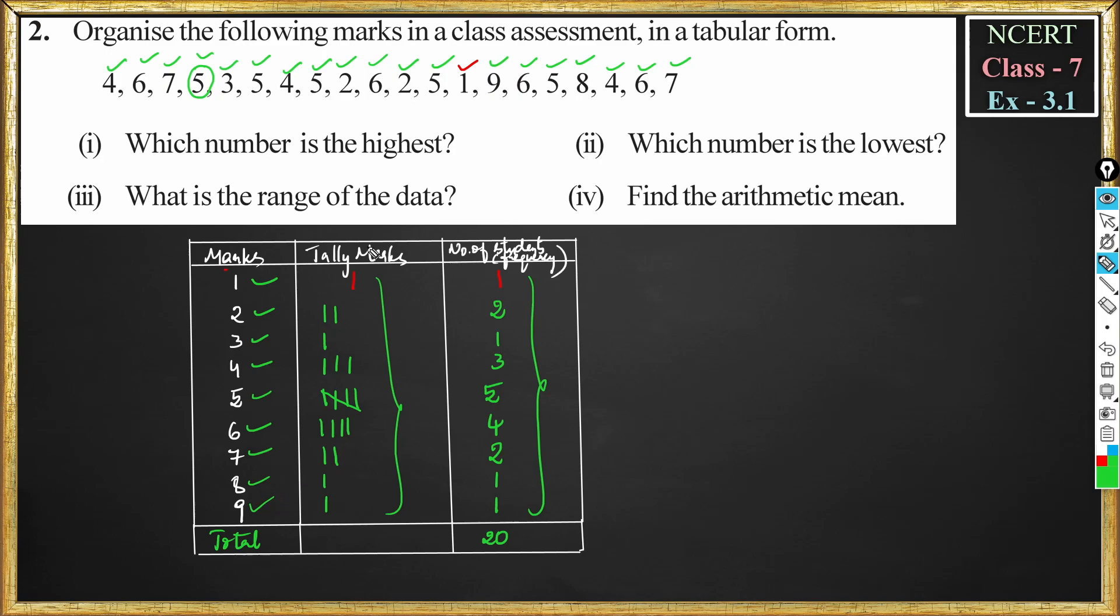Now which number is the highest? Highest is 9. So the number 9 is highest. Now which number is the lowest? Lowest is 1 mark. So 1 is the lowest.